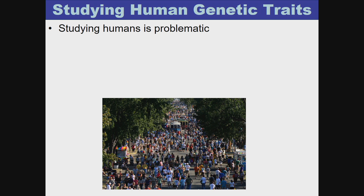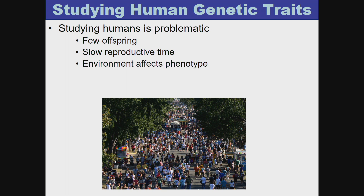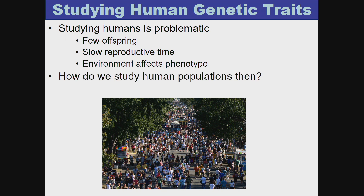Studying humans is problematic because we have few offspring — maybe one or two at most at once — and we have a slow reproductive time with a nine-month gestation period. Also, the environment can affect phenotype, meaning the environment can affect how traits show up; for example, the sun can darken skin. So how do we study human populations? Through population sampling.